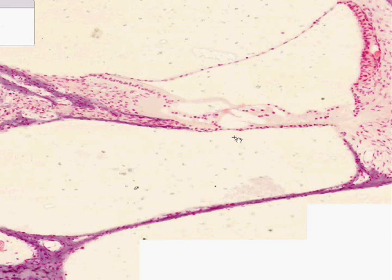So we have the scala vestibuli, vestibular membrane, scala media, organ of Corti area, basilar membrane, tectorial membrane, and then the scala tympani. The scala tympani and vestibuli being filled with perilymph, and the scala media being filled with endolymph.